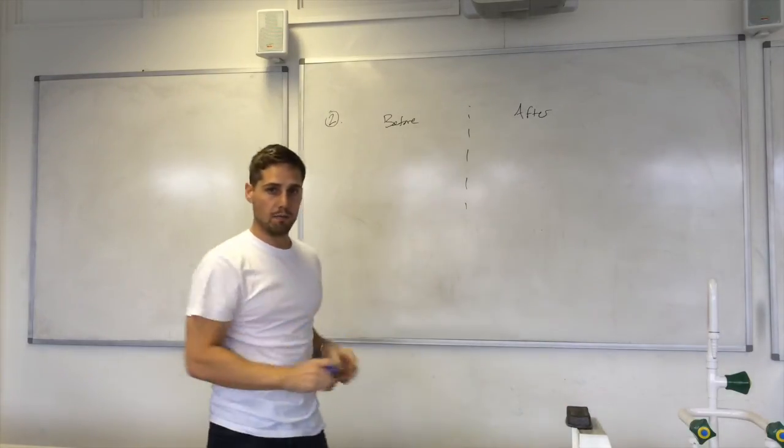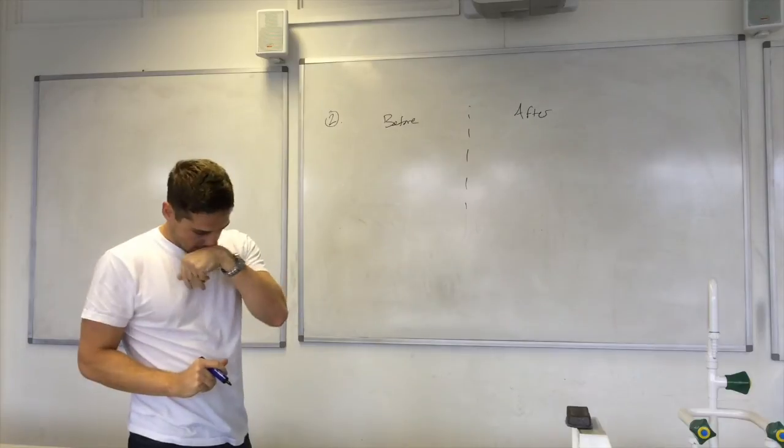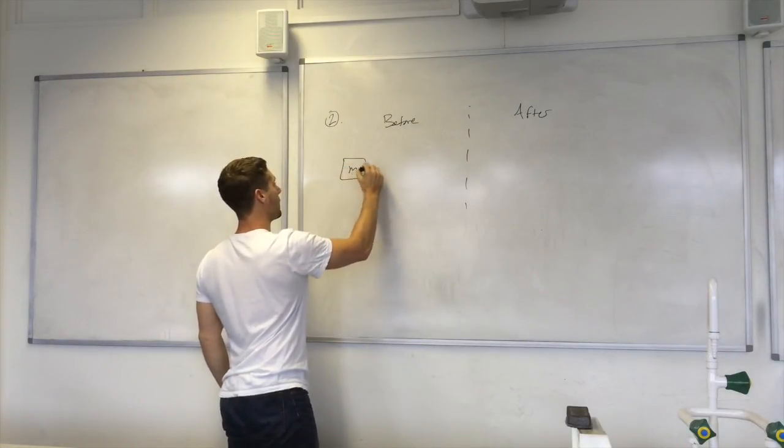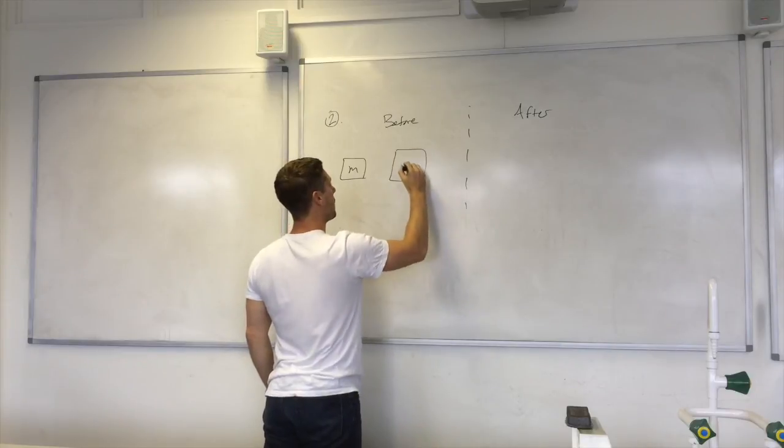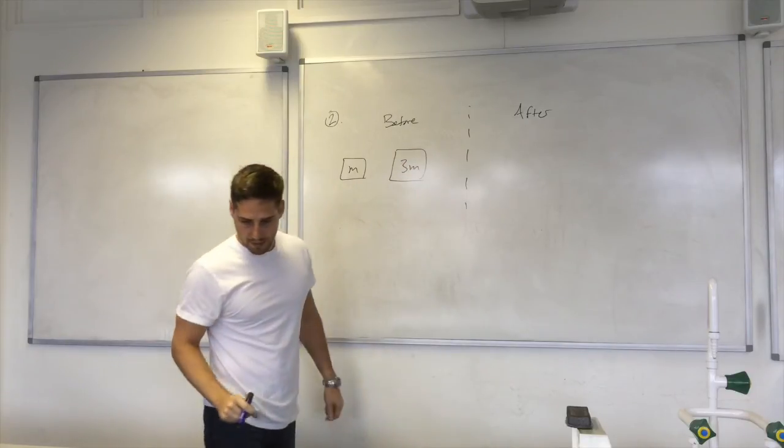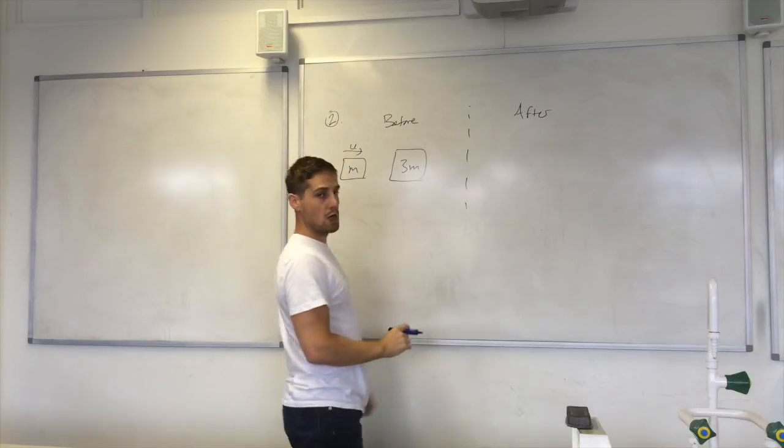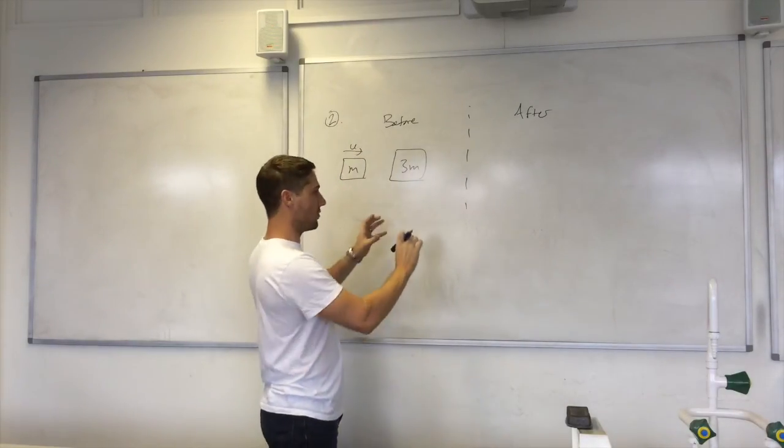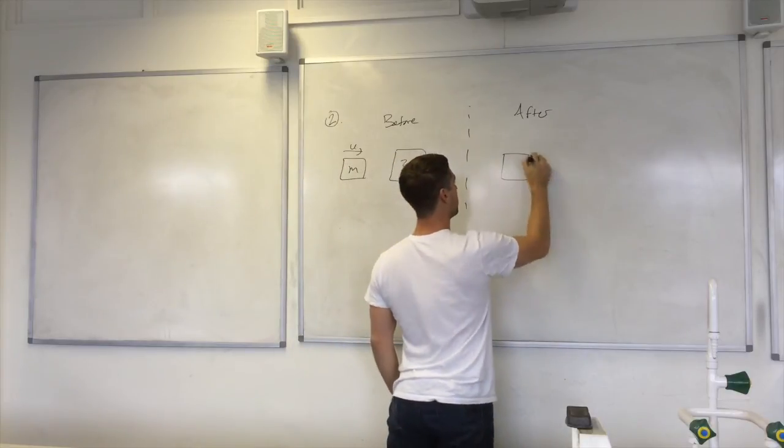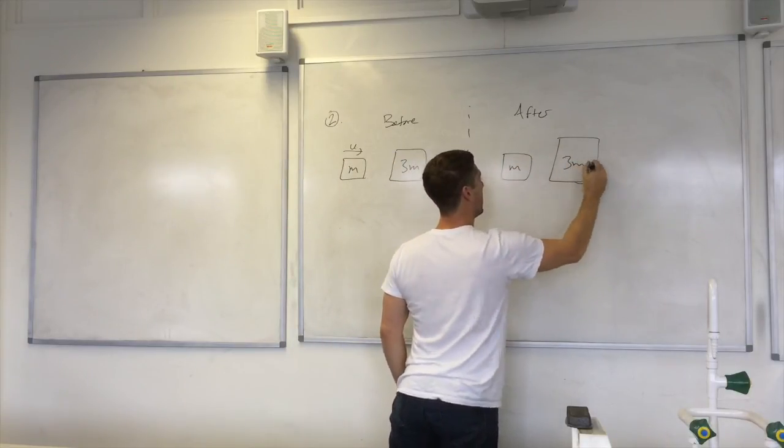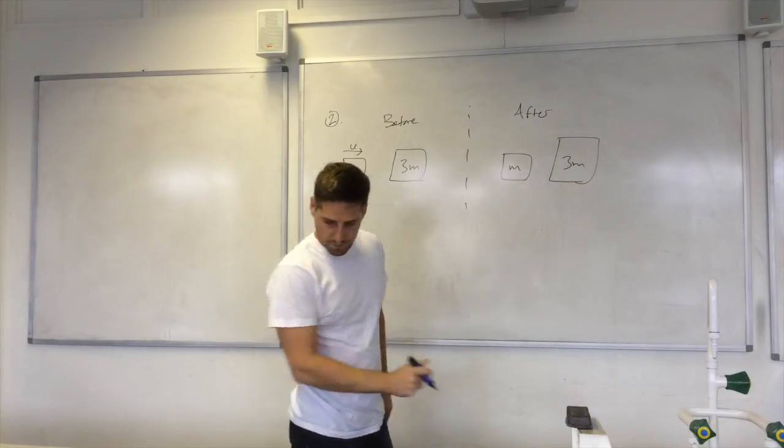Okay, I can keep the before and after set up because we're going to use it again. Okay. Before we have m and 3m. And this comes in at velocity u.